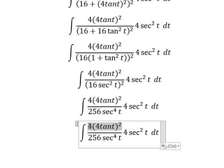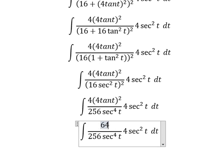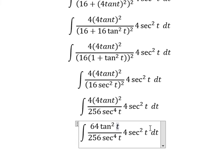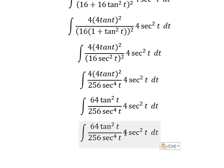This one here, that is 64 times tan squared t. Later we need to simplify: 64 over 4, and secant squared t on numerator and denominator.